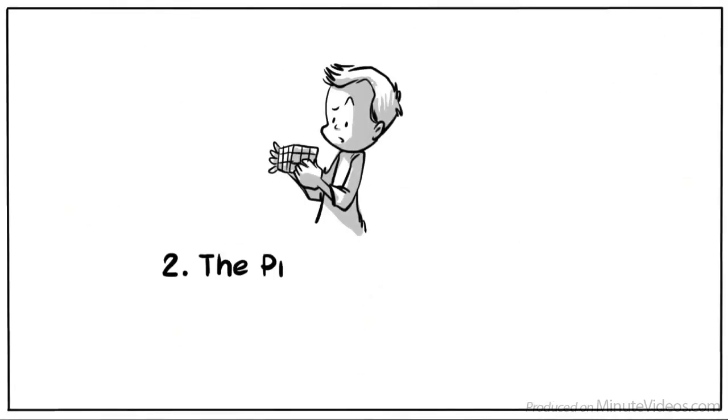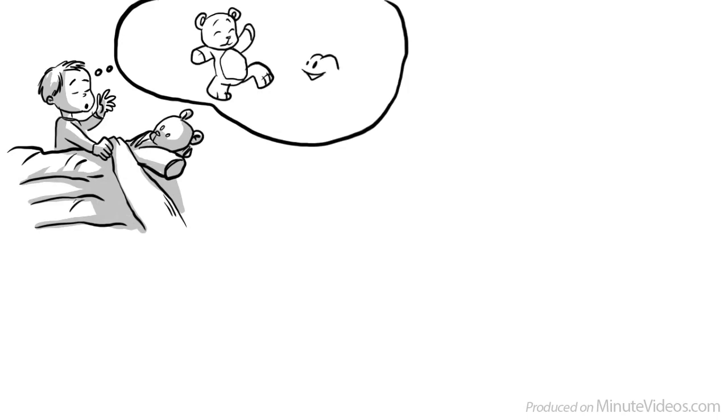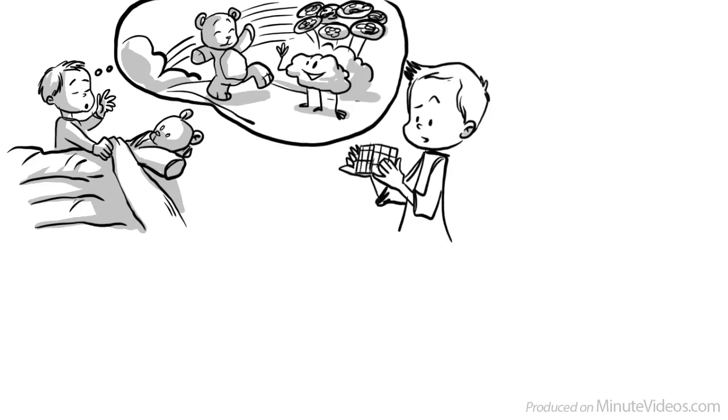Two, the pre-operational stage, ages two to seven. Our thinking is mainly categorized through symbolic functions and intuitive thoughts. We have lots of fantasies and believe objects are alive. As we are not able to apply specific cognitive operations, Piaget calls this stage pre-operational.